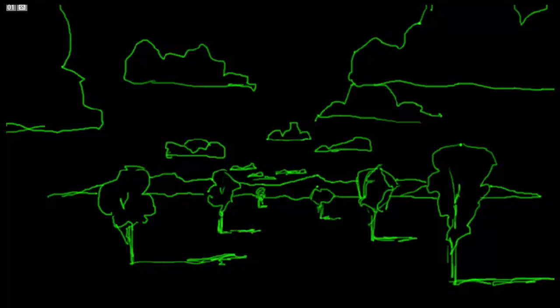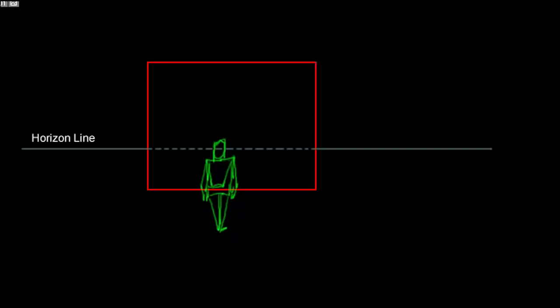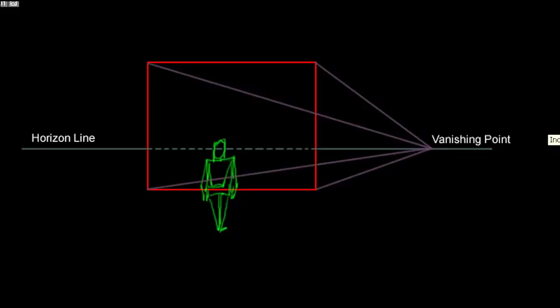Now let's look at how perspective affects a building. This is single-point perspective, and it only works if you're standing directly in front of a building where the front of the building is square. Here's the observer, here's the horizon line, here's the vanishing point. Let's draw lines from each corner of the building to the vanishing point — this is called single-point perspective. The building appears to get smaller as it moves into the distance.